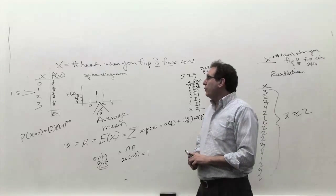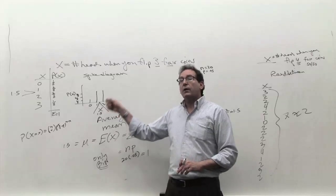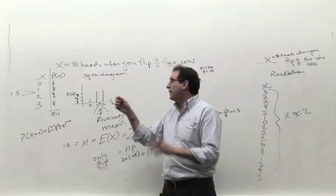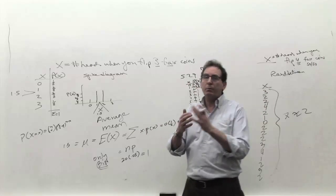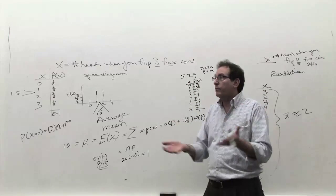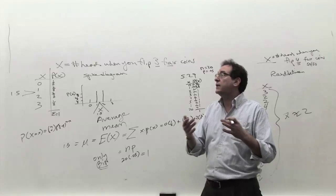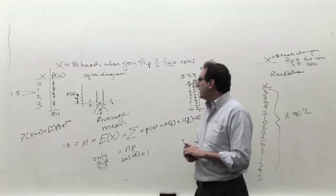But when you flip three coins, you don't always get 1.5 heads. Sometimes you get three heads, sometimes you get one head, sometimes you get... It varies. And we know from chapter three that measuring the variation of a bunch of data is quite important if you want to have a good, sophisticated interpretation. So the question, what is the amount of variation?